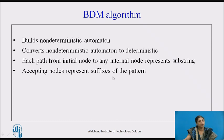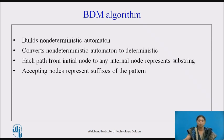How can one start? One can find a non-deterministic automata for the given pattern and convert that non-deterministic automata to a deterministic one. In this automata, each path from the initial node to any internal node represents a substring, whereas a path from the initial node to any accepting node represents one of the suffixes for the given pattern.